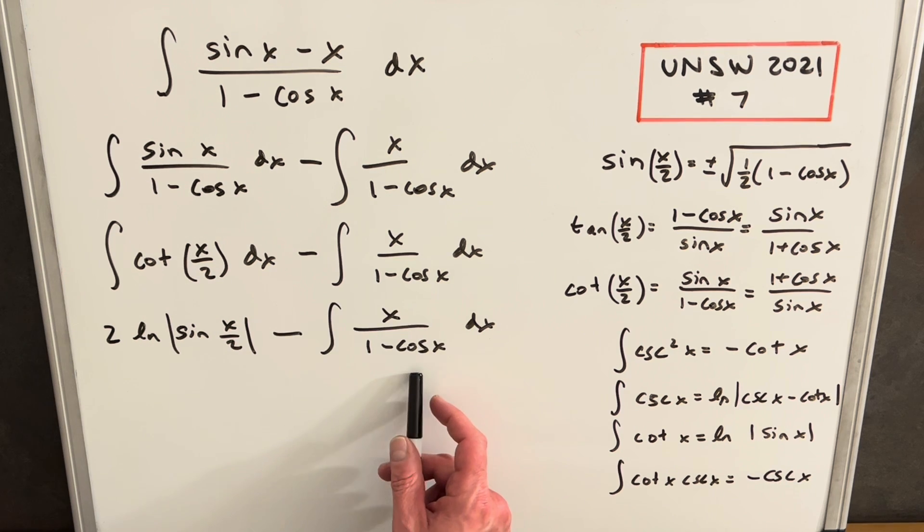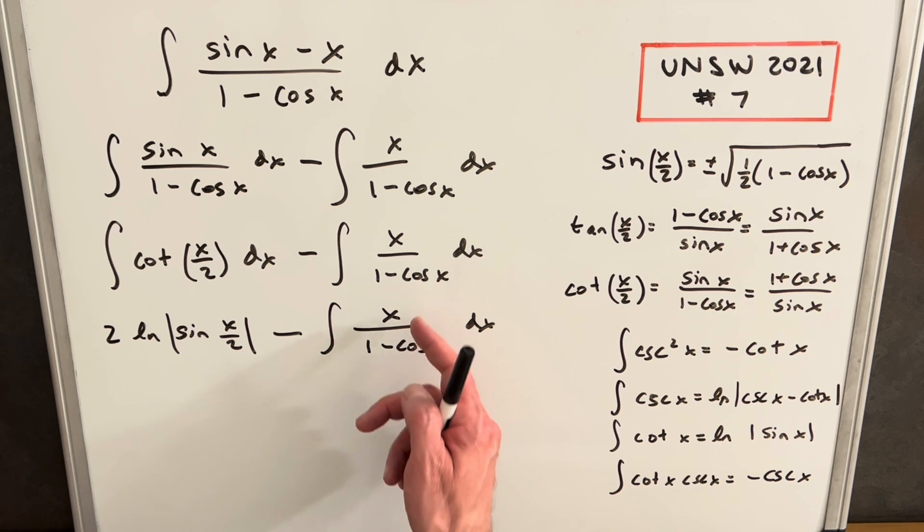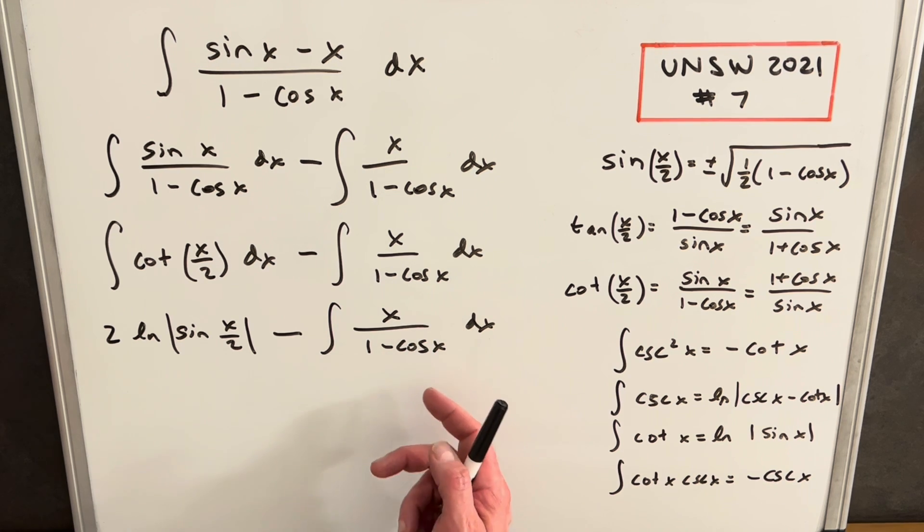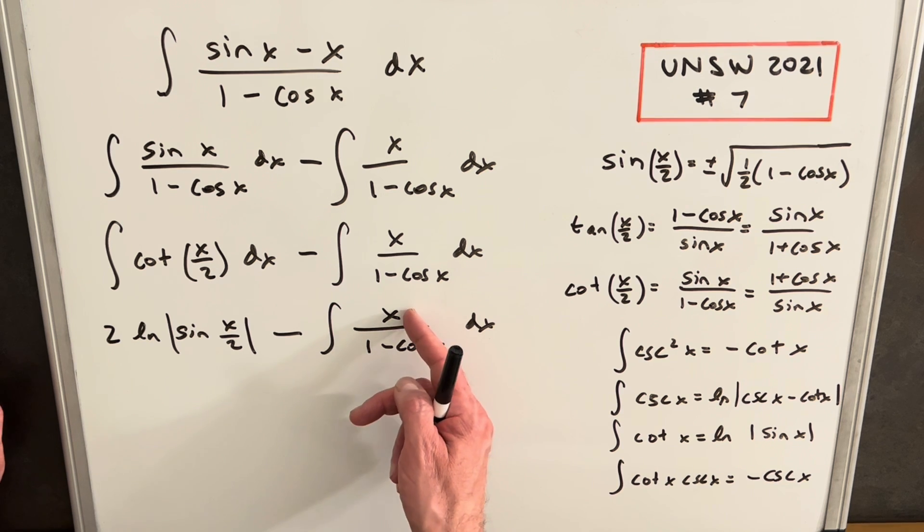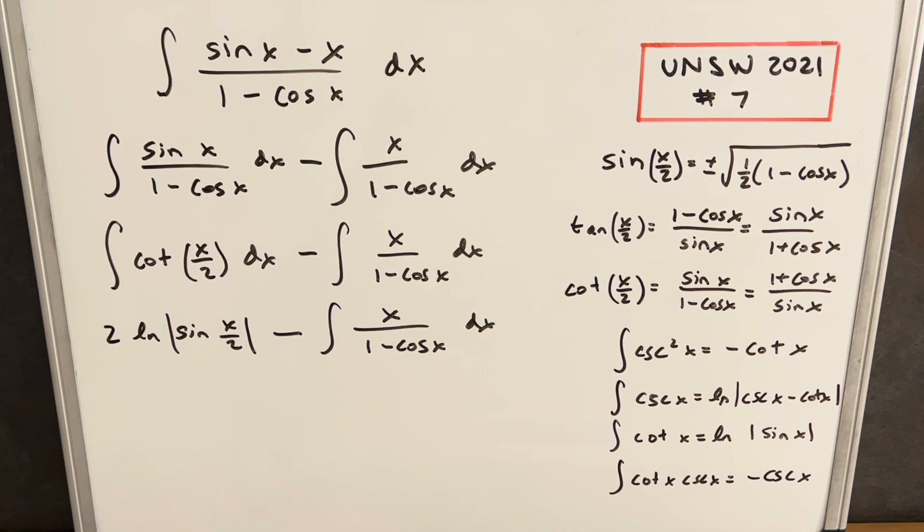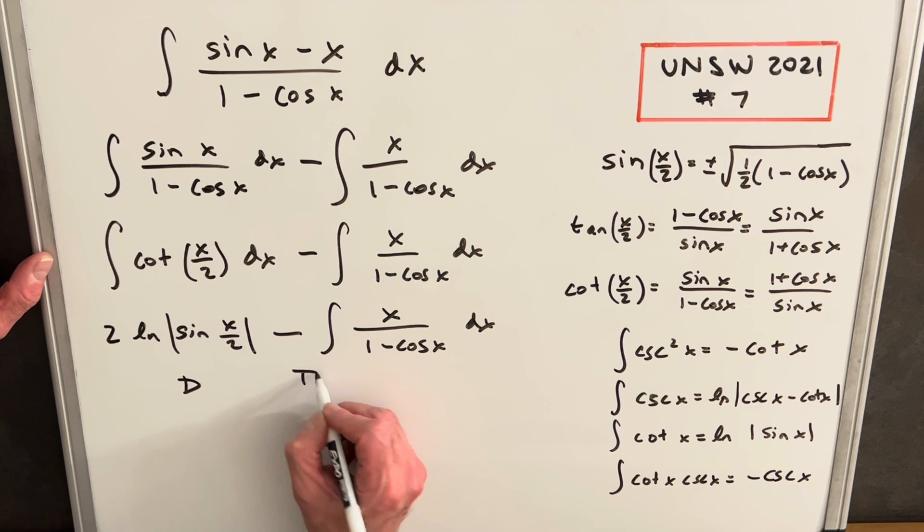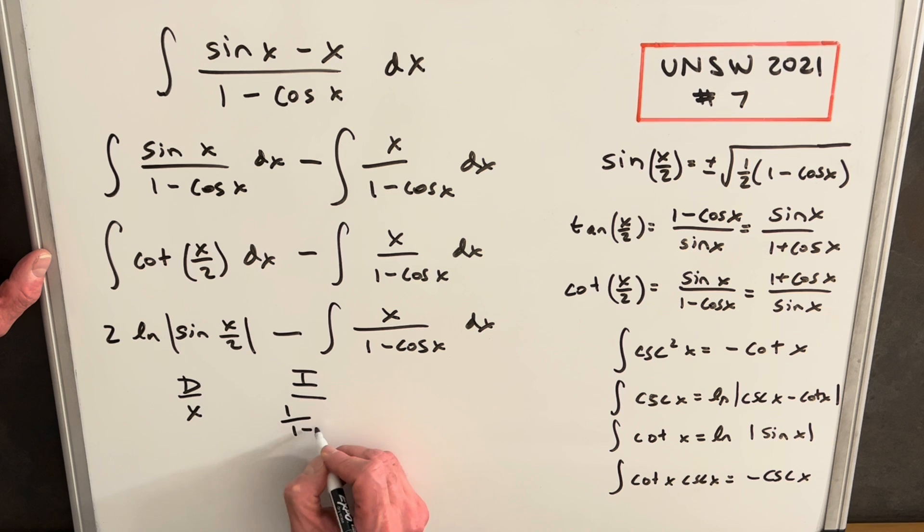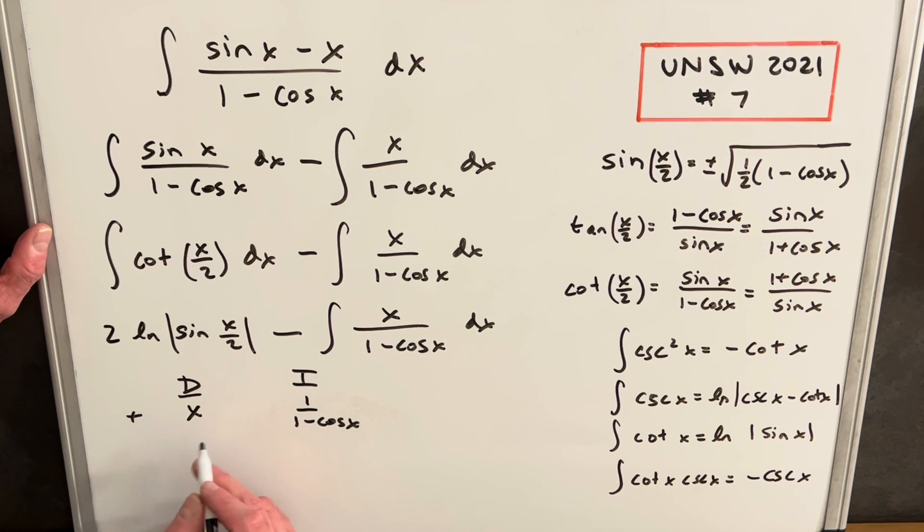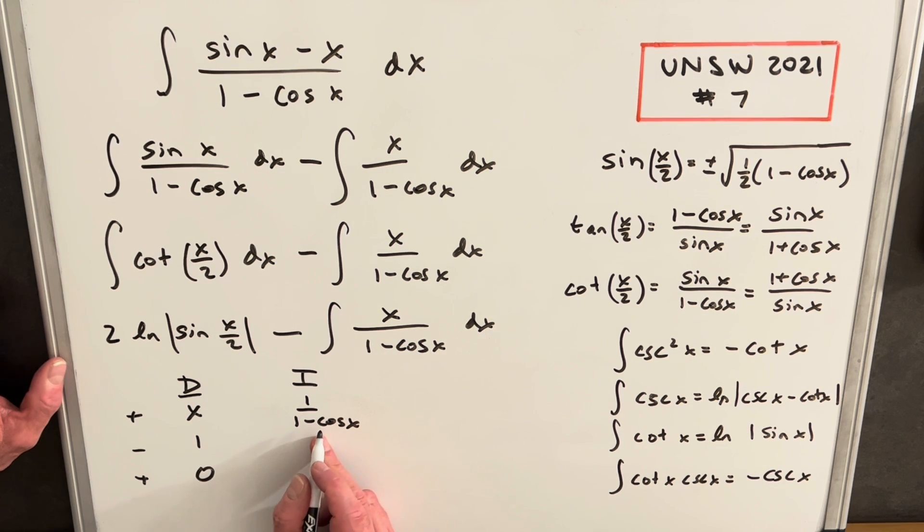Now this integral over here looks pretty tricky because we don't have a way to deal with having x and cosine x together. There's not really a good u substitution. In a case like this, we can do integration by parts and differentiate the x. Let's use the DI method. We'll have our tabular integration table, differentiate x and integrate 1 over 1 minus cos x. Then we'll differentiate x and we have 1, differentiate again and we'll have 0.